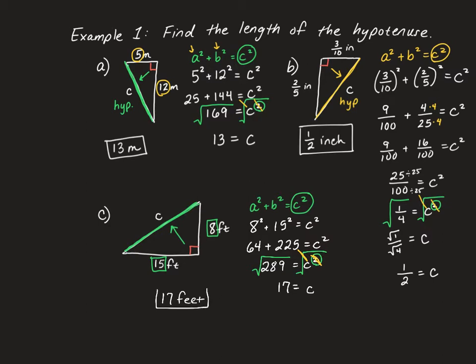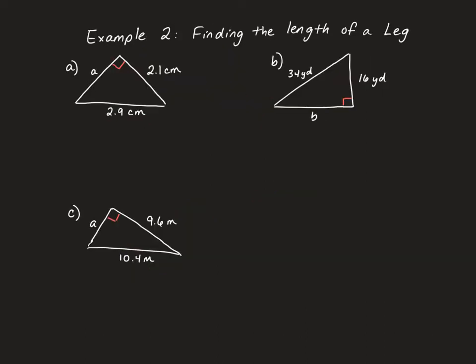If you have a hard time multiplying squares and finding square roots, it's okay to use a calculator during these lessons. For example 2, I want to find the length of a leg. This is still a right triangle. The side opposite the right angle is the hypotenuse — that's 2.9. For all of these, we use A squared plus B squared equals C squared, and the hypotenuse is always the letter C. So we'll substitute 2.9 in for C.